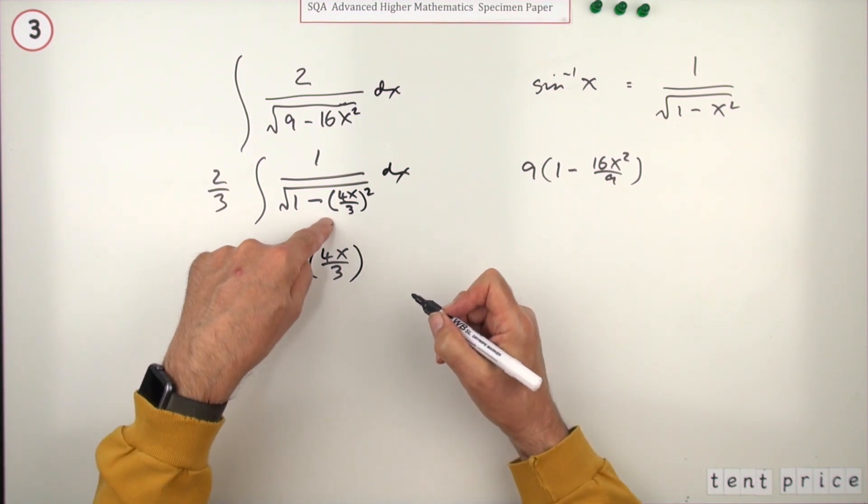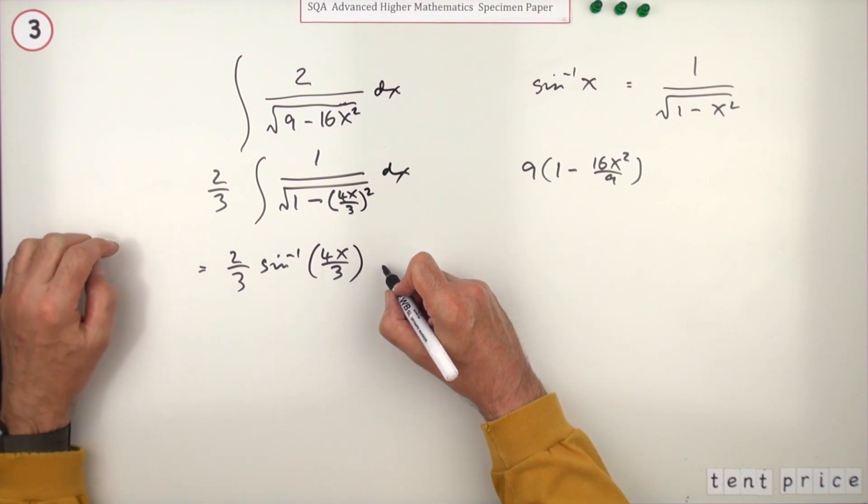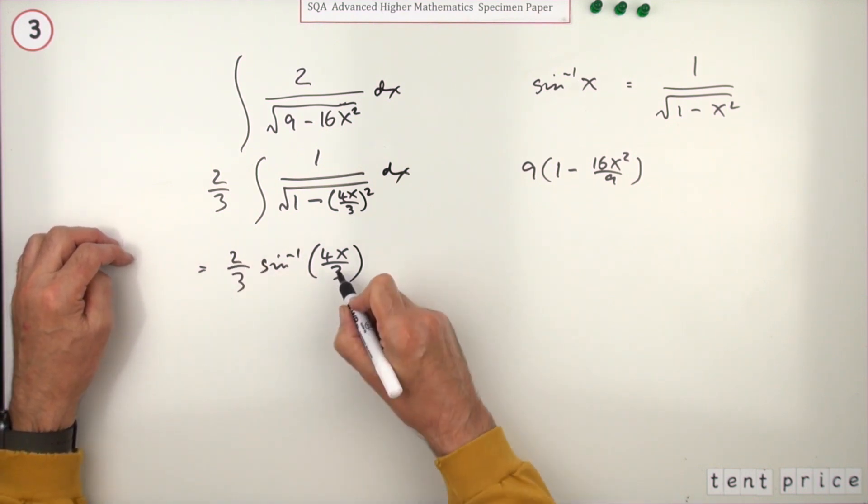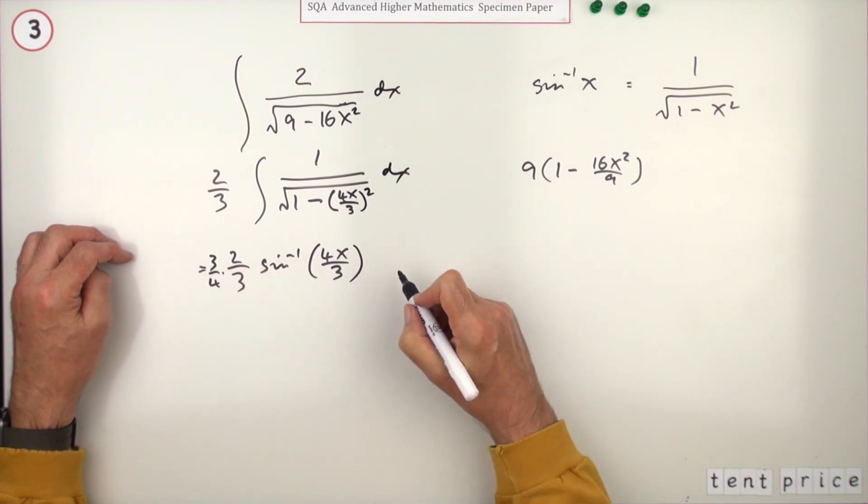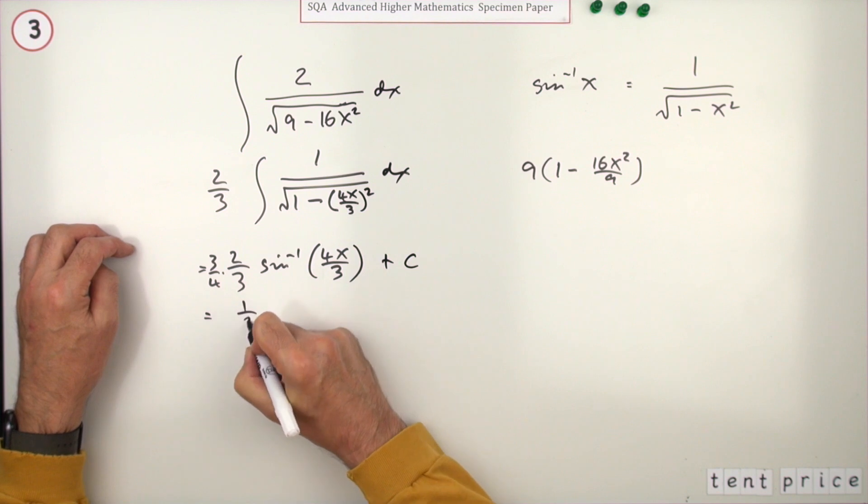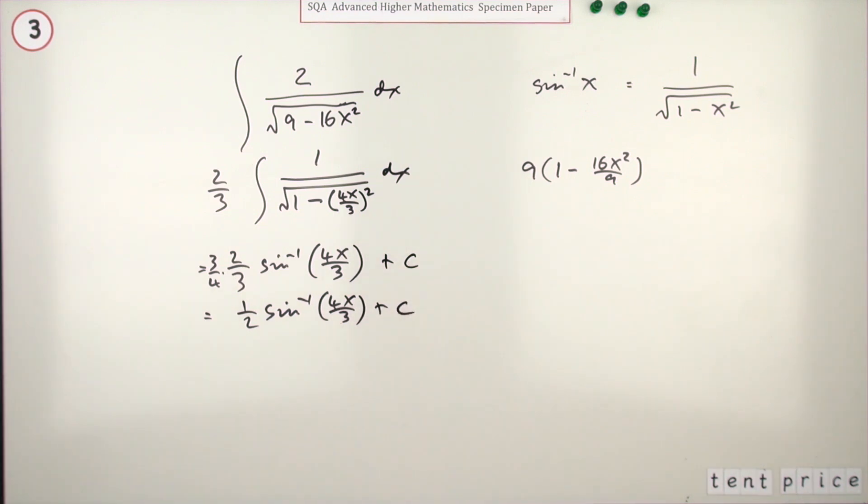But since it was a function of a function, you'll have to divide by that 4 upon 3. Dividing by 4/3 means multiplying by 3/4. Don't forget the plus c, which then again comes to half of inverse sine of 4x upon 3 plus c, as before.